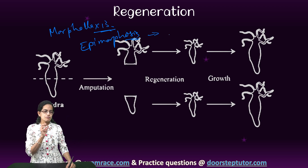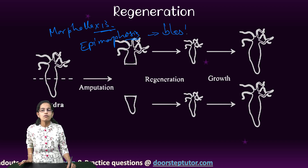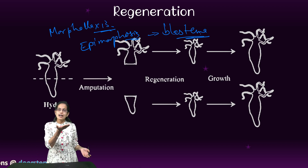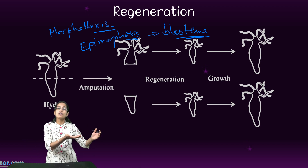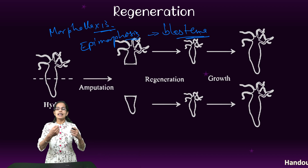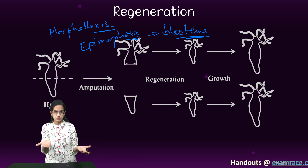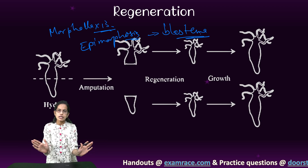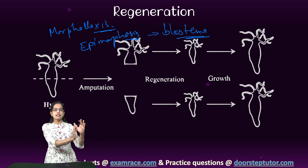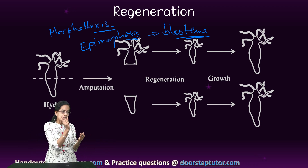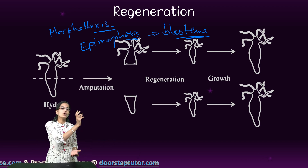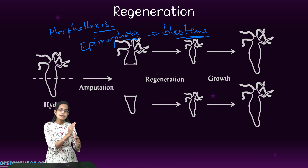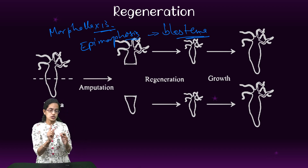Epimorphosis involves the formation of a blastema at the site of separation, resulting in growth of a new, properly patterned structure. A good example is the regeneration of a lizard's tail — if the lizard is broken at any other part it won't regenerate, but the tail specifically will regenerate. That is the process of epimorphosis.